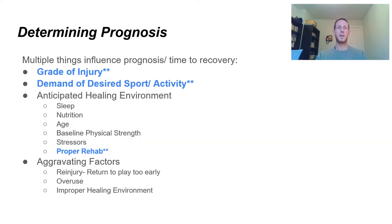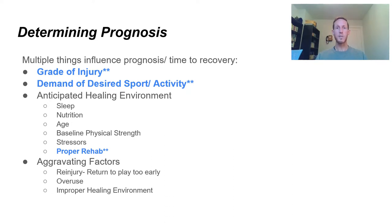When determining prognosis — how long is this going to take to get better — that depends on a couple of things, which is what we're figuring out in that thorough initial assessment. We look at the grade of injury: obviously, the higher the grade, the longer it takes. We consider the demand of your desired sport and activity — hockey is a very strenuous sport with contact, putting a lot of stress on the body. That's a higher demand than somebody returning to an office job.